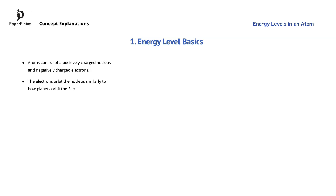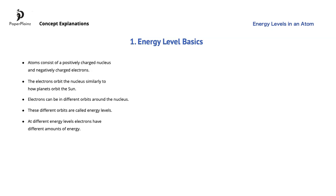Of course, this is a simplified model, but it will help us understand energy levels. Just as different planets are in different orbits around the sun, electrons can be in different orbits around the nucleus. These orbits are called energy levels. At different orbits or energy levels, electrons have different amounts of energy.